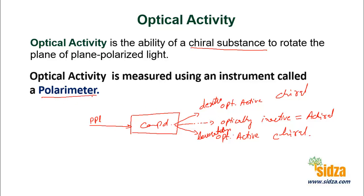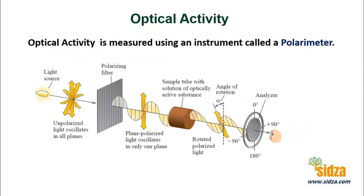The instrument we use for measuring optical activity is called a polarimeter. We have a source of light — ordinary light is unpolarized because it oscillates in all planes, with electric and magnetic fields oscillating in all planes. When you pass it through a polarizing filter, a plane polarized light oscillates only in one plane. When we pass this PPL light through a solution which is optically active — contained in a sample tube — and observe it through the analyzer, there will be some rotation, either in the right direction or in the left direction.